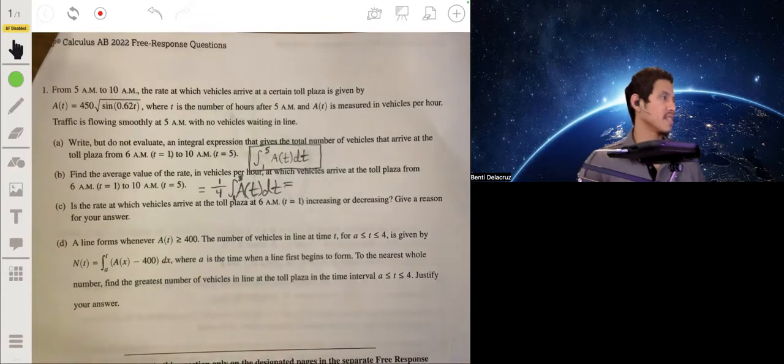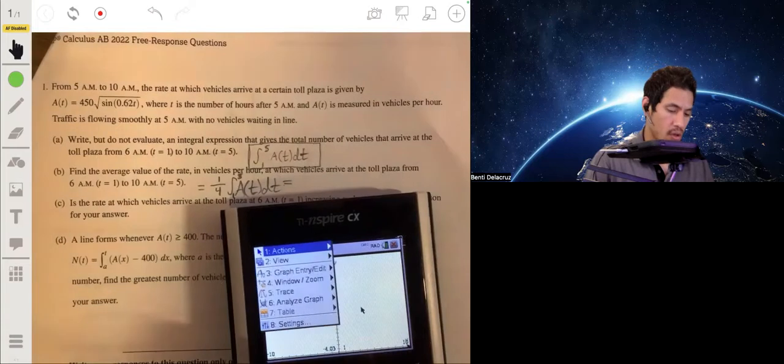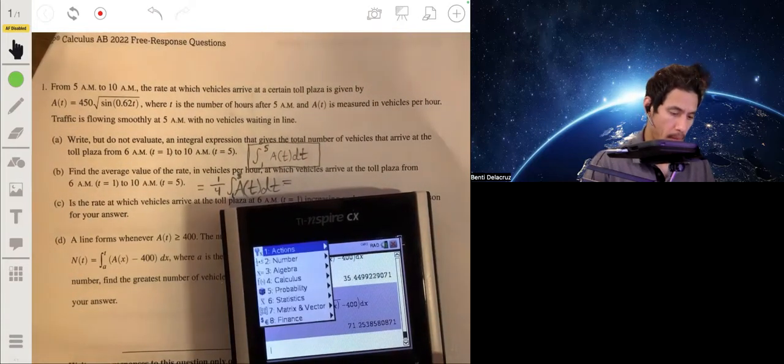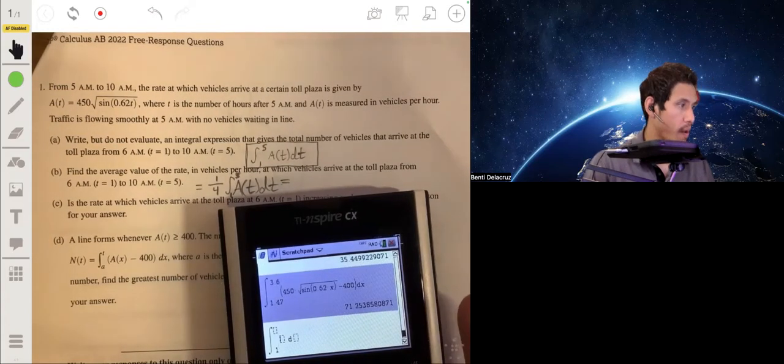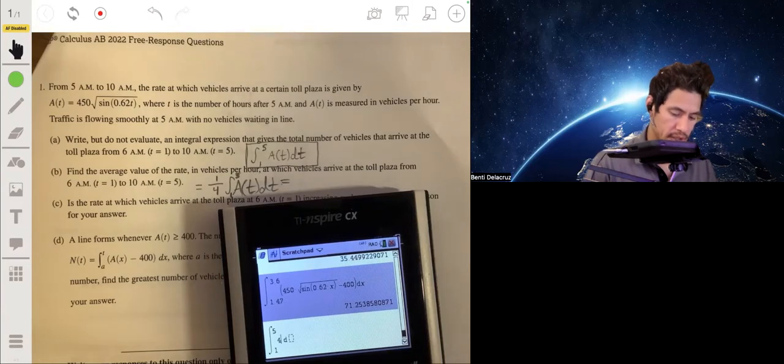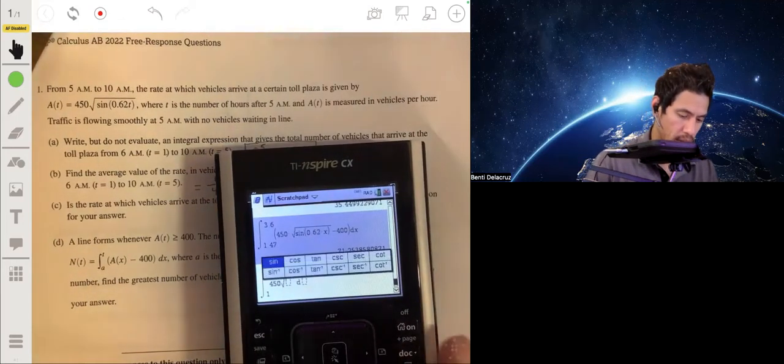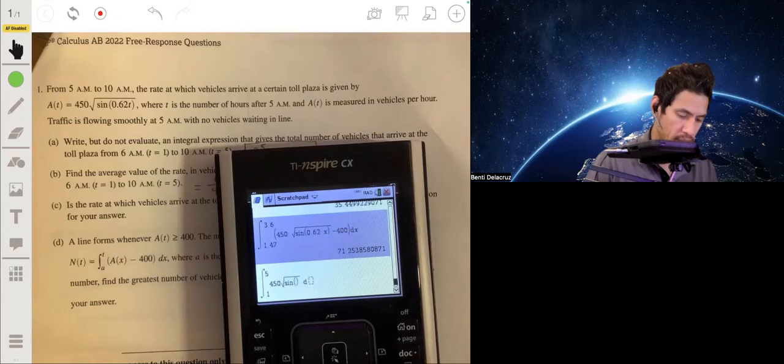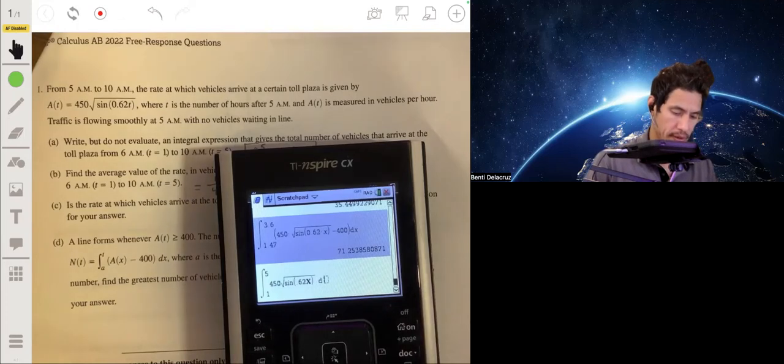And since it's a calculator question, you can just use your calculator to calculate this. So let's go to the calculation tab. Calculus numerical integral from 1 to 5. Let's make sure we enter our expression correctly. 450 times the square root of the sine of 0.62, and we'll use x dx.